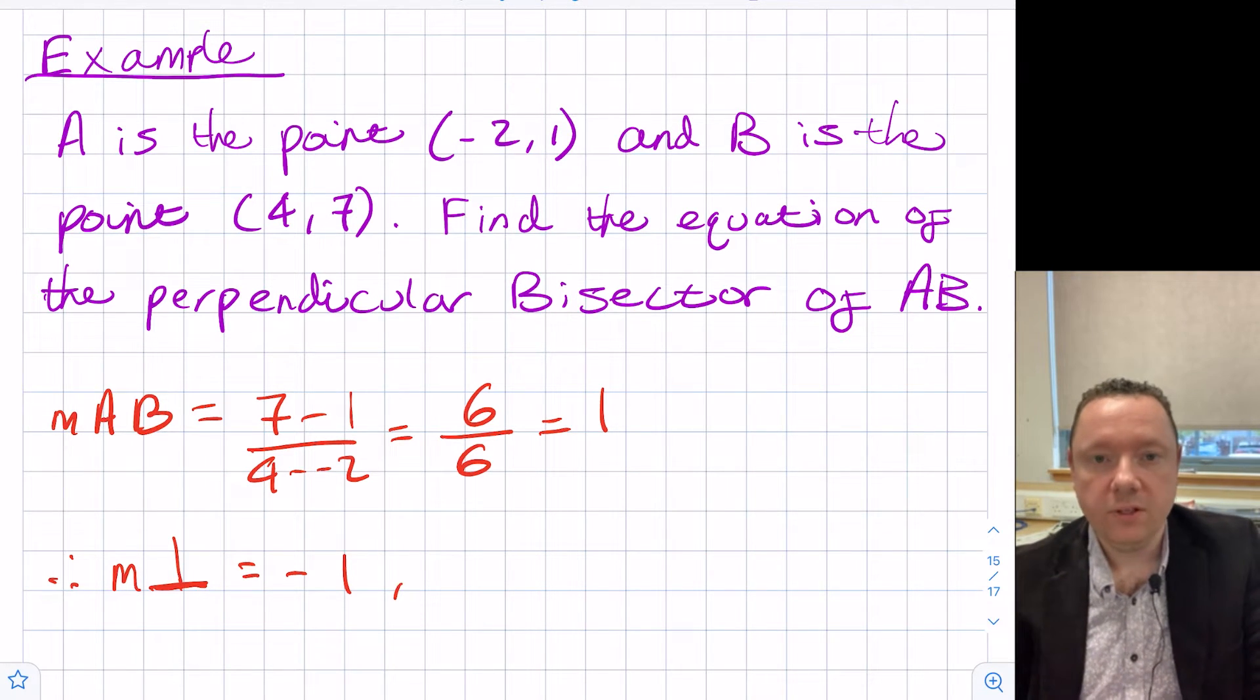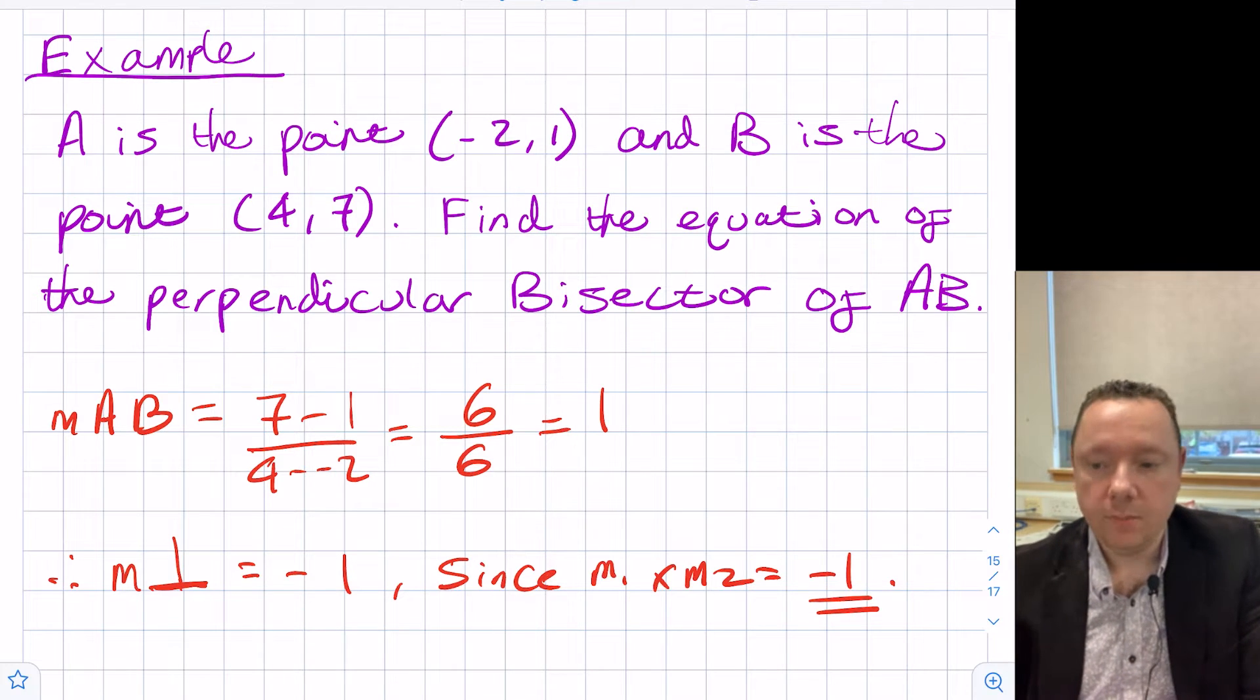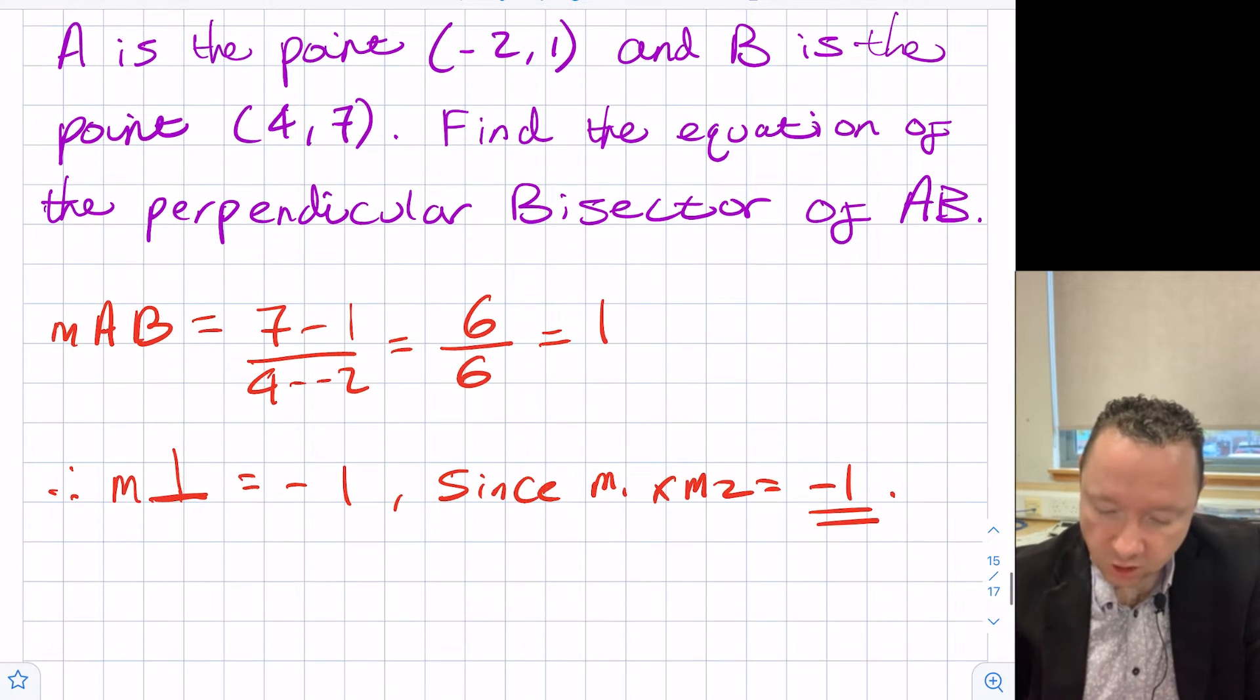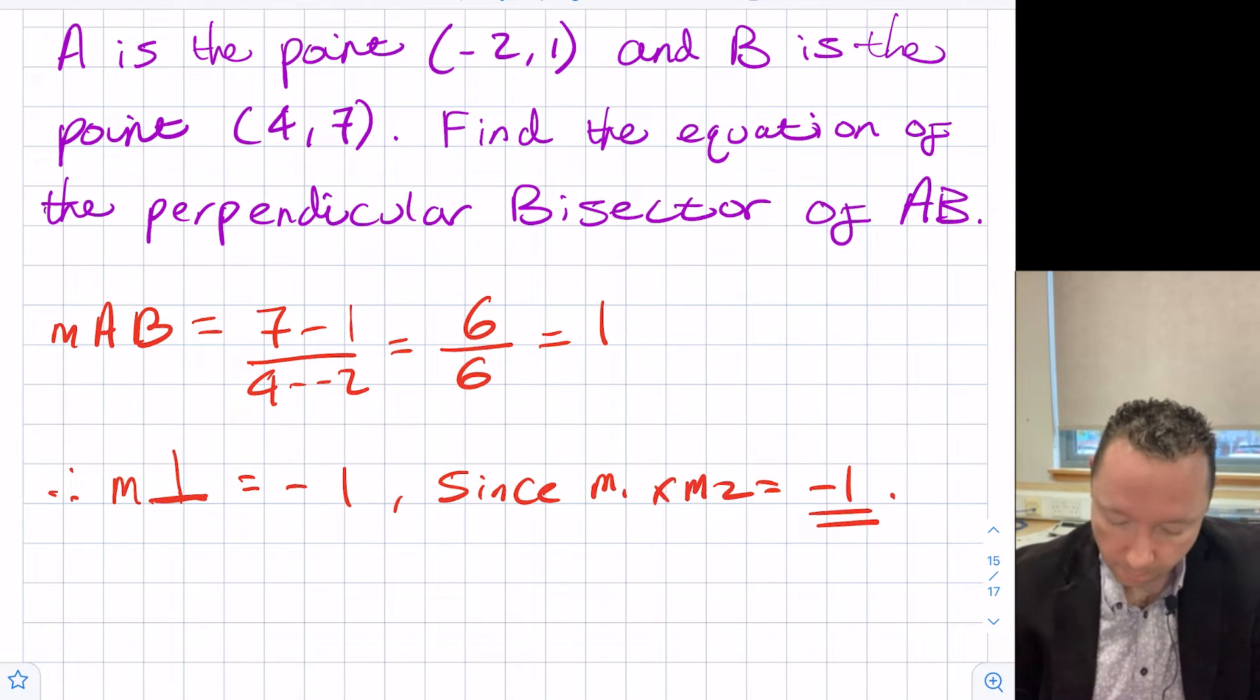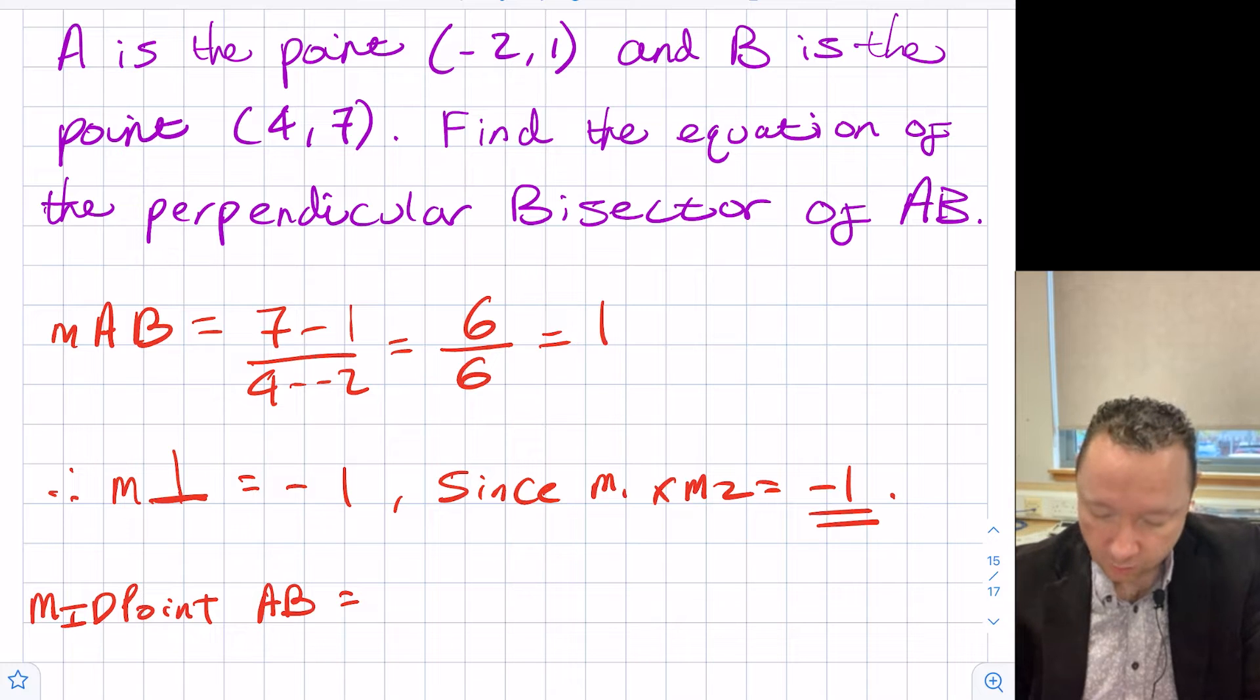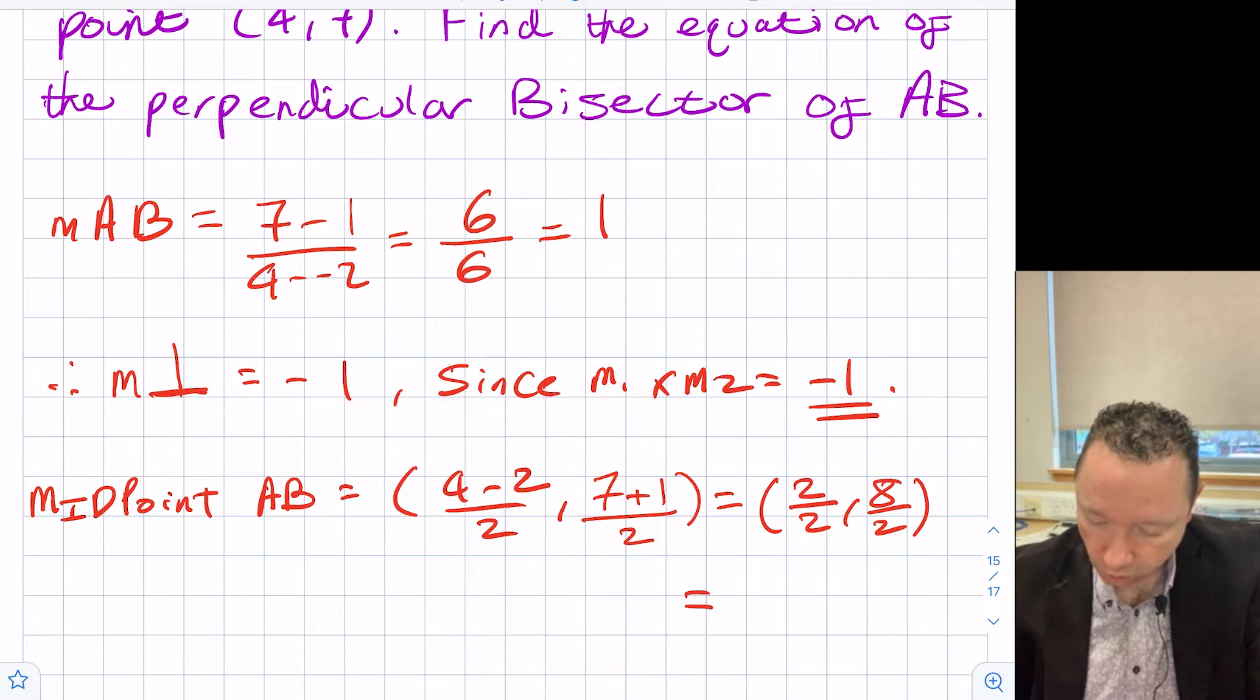And we always need to write the statement, since m1 times m2 equals minus one. So we now know our gradient is minus one. Now remember perpendicular bisector is a line that cuts it in half, so we need the midpoint of A and B as well. The midpoint of A and B, we can do that by adding up the x's, four minus two, and taking the average divided by two. And then the y's, seven plus one, also divided by two. That's two over two and eight over two. Our midpoint is equal to one, four.